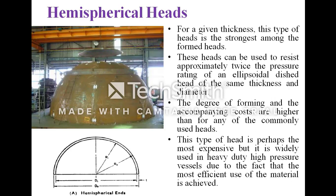Hemispherical heads: for a given thickness, this type of head is the strongest among form heads. These heads can resist approximately twice the pressure rating of an elliptical dish head of the same thickness and diameter. The degree of forming and the accompanying cost are higher than all other common types of heads. This type of head is perhaps the most expensive, but it is widely used in heavy-duty high-pressure vessels because the most efficient use of material is achieved.